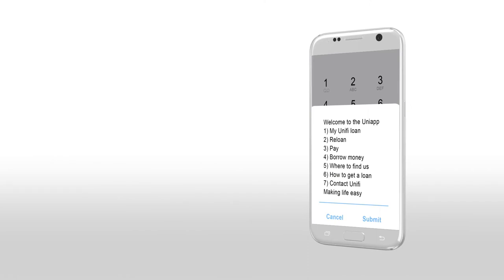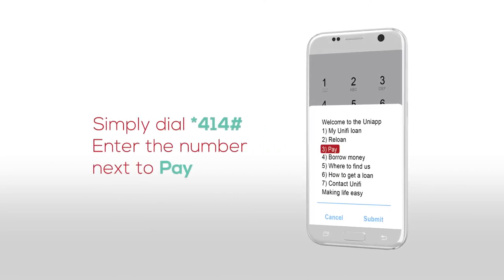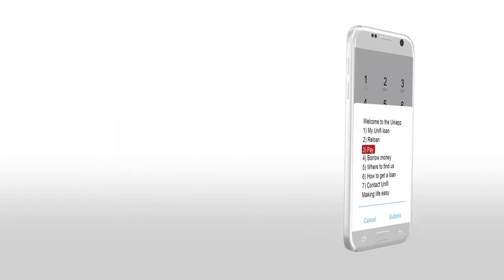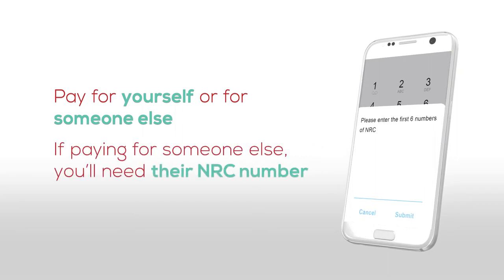Simply dial star 414 hash and enter the number that's next to pay. You can pay for yourself or pay on behalf of someone else. Choose who you're paying for. If you're paying for someone else, you will need their full NRC number.